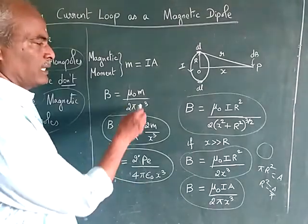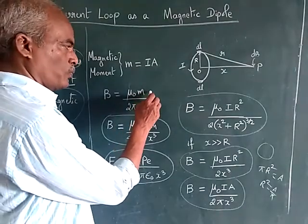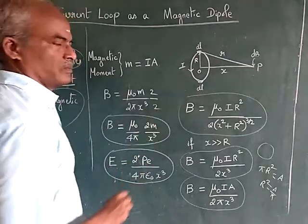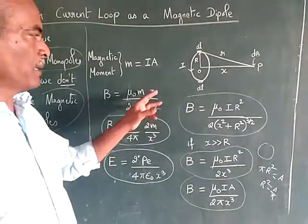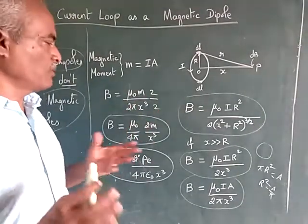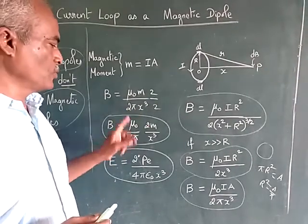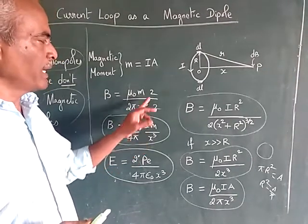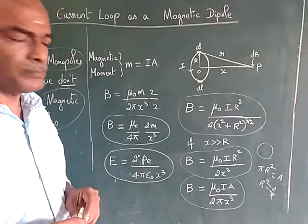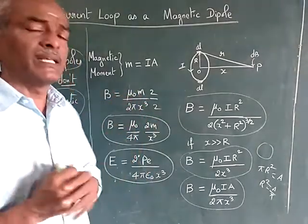So now you multiply this equation by 2 and divide by 2. So what will happen, mu naught 2 into 2 is 4 pi, 2m divided by x cube. So this is the final expression.